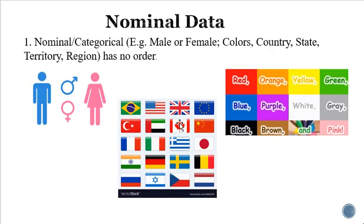Nominal data is the one which has a name that is unique — for example, male. It is the thing which has no order. At the same time, nominal data is that which we cannot measure. Can you measure a country? Can you measure the color red? Can you measure male or female? That doesn't make sense.